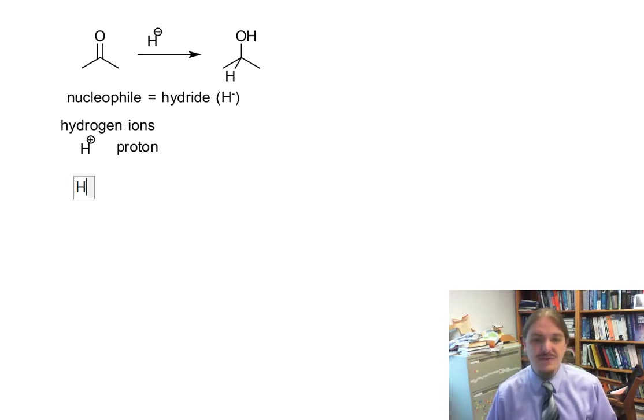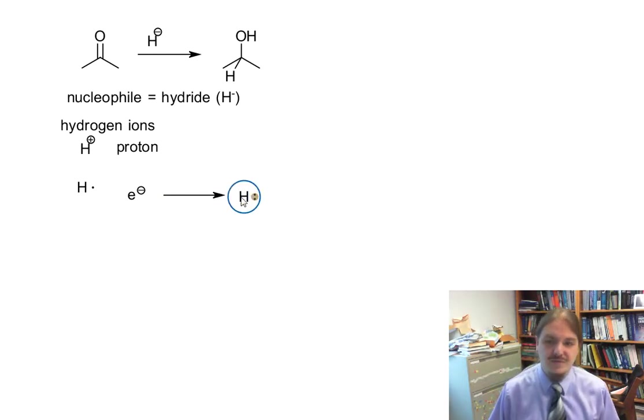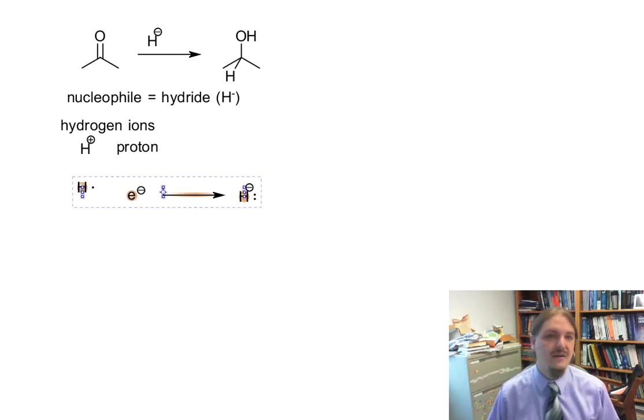But instead of a hydrogen atom losing an electron to become H plus, hydrogen can gain an electron and become hydrogen with a lone pair and a negative charge. And this thing is called a hydride.